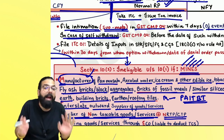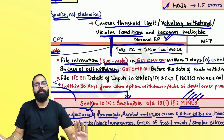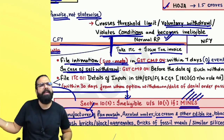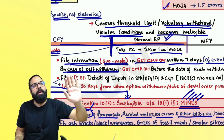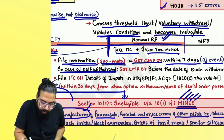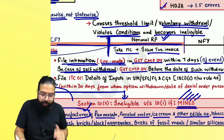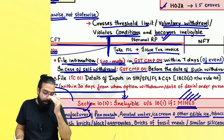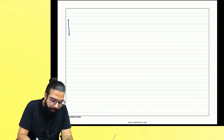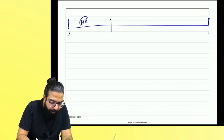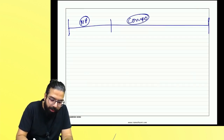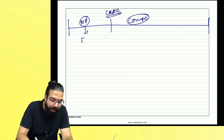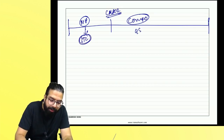In case of self withdrawal, file CMP-04 before the date of such withdrawal. Now, if you were a normal person and want to come into composition, file CMP-02 at the beginning of the year. When you were a normal person, you were taking ITC. When you become a composition person, you will not charge GST and will not take ITC. But one day before coming under composition, inputs, semi-finished goods, finished goods, and capital goods are lying in your stock — and you had taken ITC on all of those.